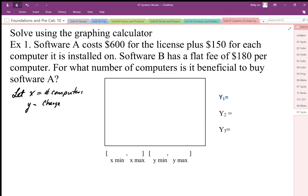The first relationship is for Software A. The total amount equals $600 plus $150 per computer. The $150 represents our slope. So that's Software A: y = 600 + 150x.